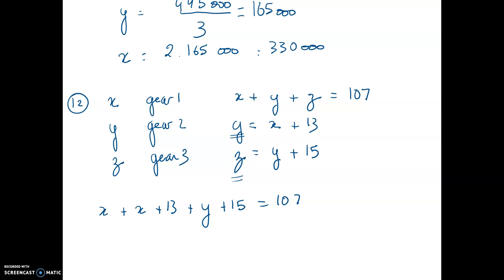And to do that, it's going to be very simple. You are going to substitute your Y by X plus 13 a second time. Because right now, Y appears a second time. So you end up with X plus X plus 13. Then you substitute again Y by X plus 13 plus 15 equal 107.